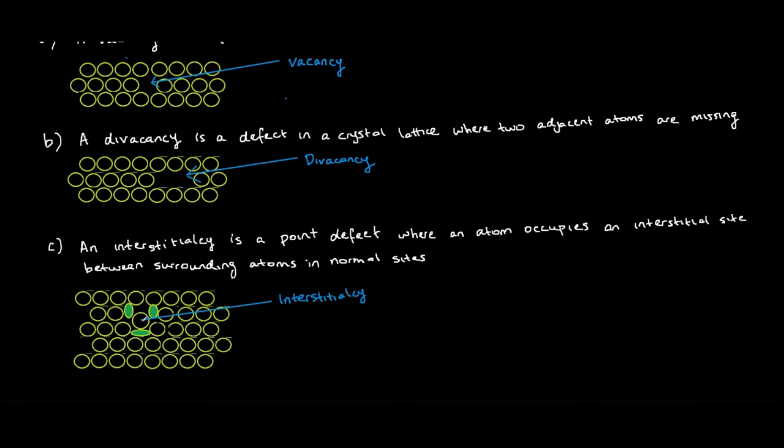So basically, if you imagine that there were three atoms here - one, two, three - but now they made space for another atom to fit in, that's basically what an interstitialcy is. Just three atoms making way for one atom, and that's the answer to these questions.